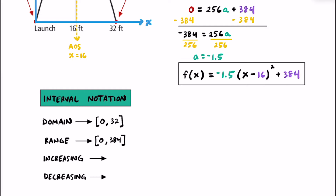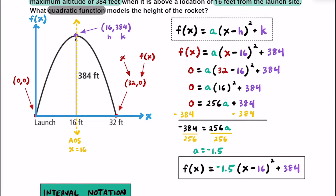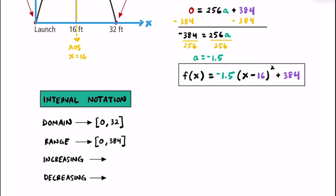What about when this function is increasing and decreasing? The rocket is going to be increasing from the launch all the way to the vertex. It starts increasing at x equals 0 and stops increasing when x equals 16. So the increasing interval is written as (0, 16) with parentheses, because at 0 it's not yet increasing and at 16 it's turning around and about to start decreasing.